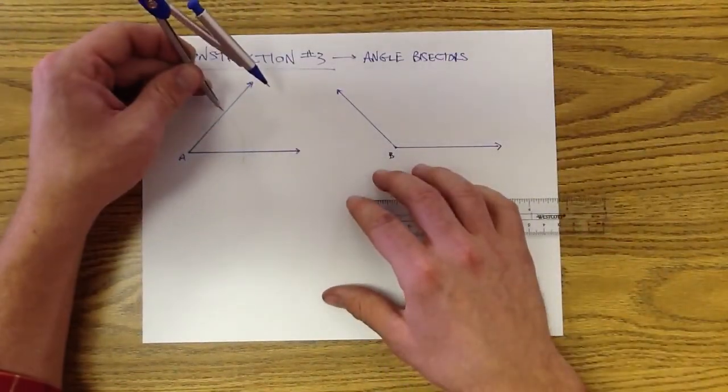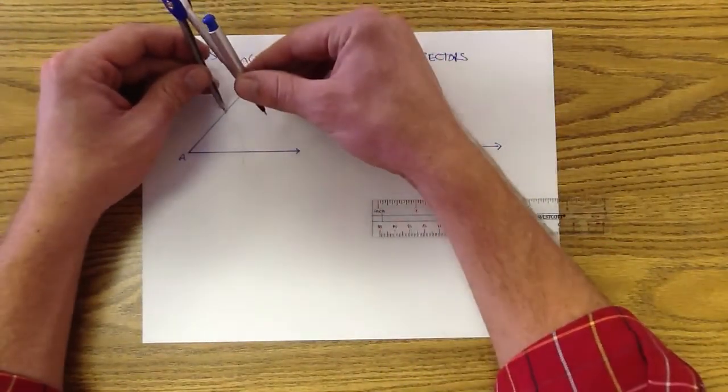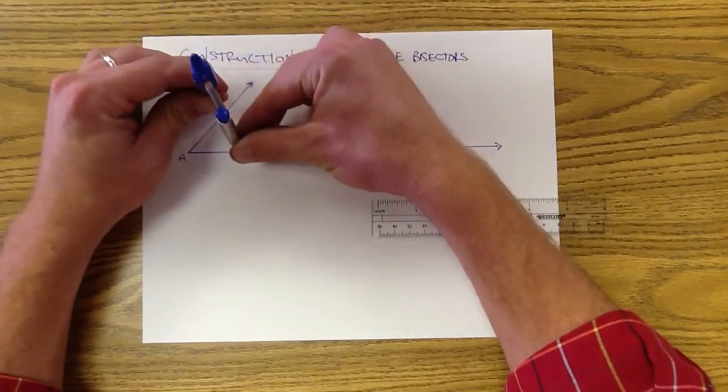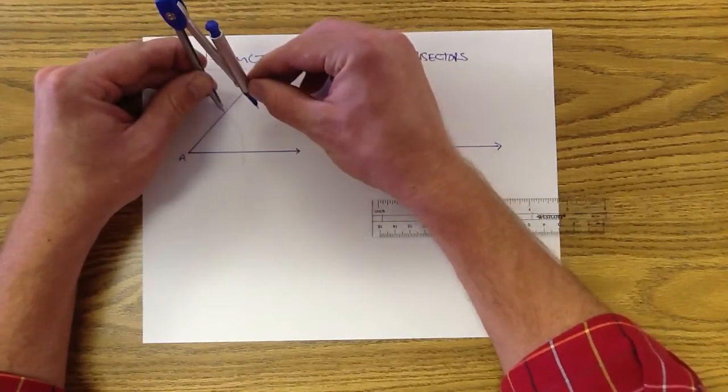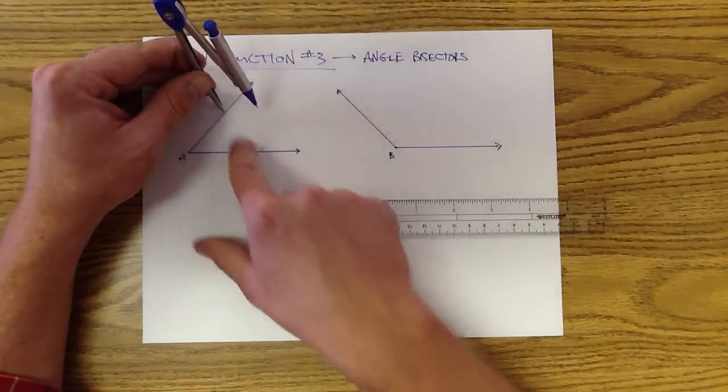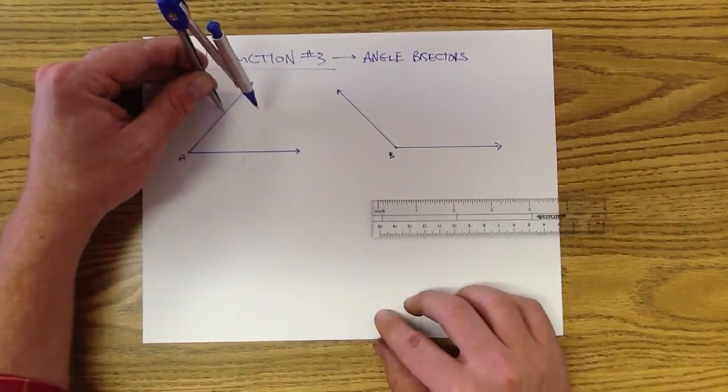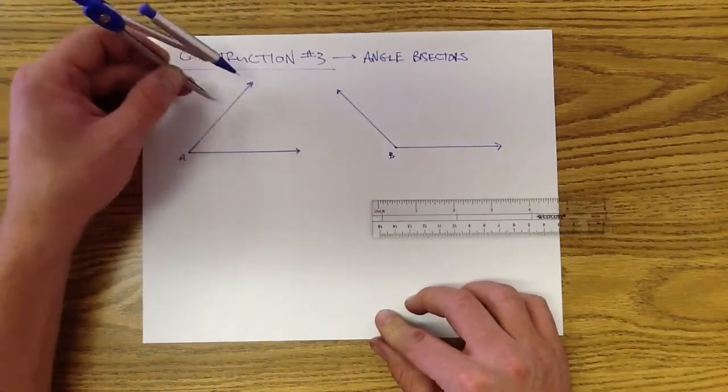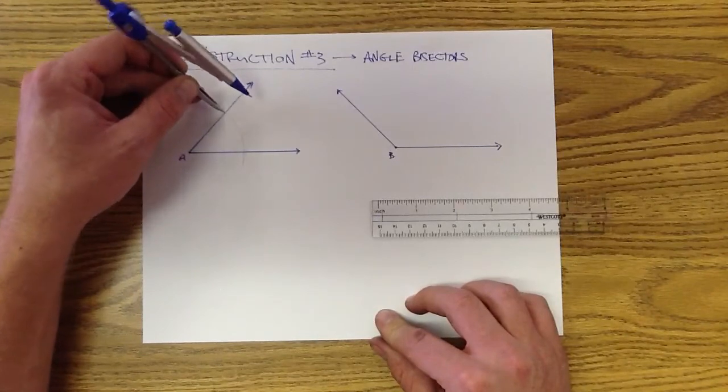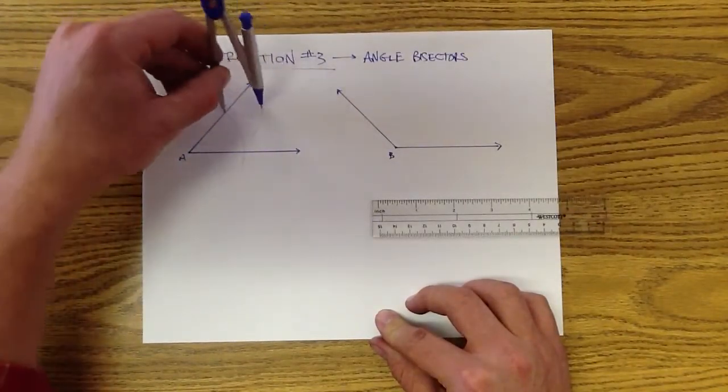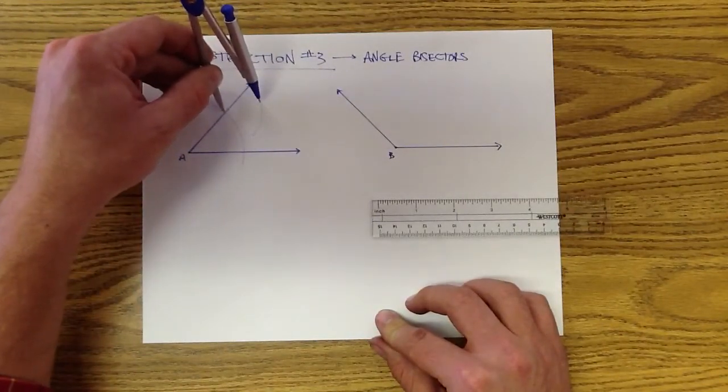The next thing you're going to do once you have that arc taken care of is you're going to take your point and say the distance between here and this point is about that. You want to pick some distance of a compass that's at least over halfway from this point to this point. You're going to put the point of your compass there and strike an arc somewhere in the middle of your angle there.